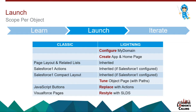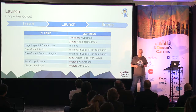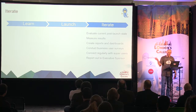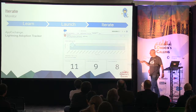I recommend going through each object in your solution and iterating through a checklist. Things to do include: configure My Domain, create the home page. Page layouts are inherited from Classic. Salesforce One actions and compact layouts are inherited if you've already configured Salesforce One — otherwise you need to configure them. I recommend tuning the object pages. For more complicated items: JavaScript buttons and URL hacks need to be replaced with actions, and Visualforce needs to be restyled with SLDS. Then test in sandbox and iterate.